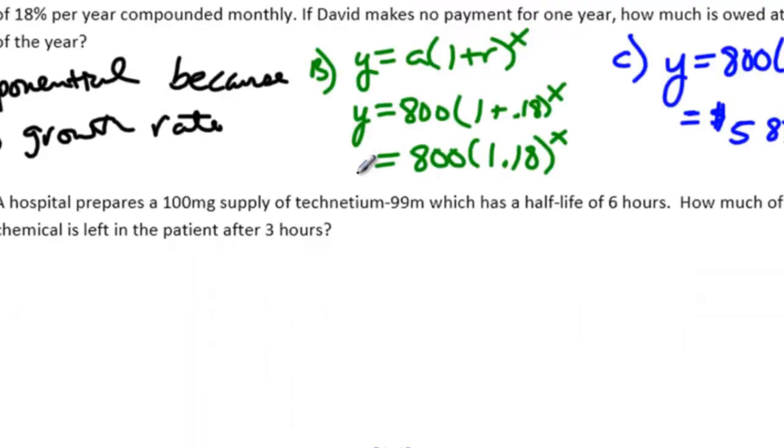Number 4. We have two problems left. Hospital prepares a 100 milligram supply of technetium-99m, which is a certain drug they use to treat cancer, which has a half-life of 6 hours. How much of the chemical is left in the patient after 3 hours?